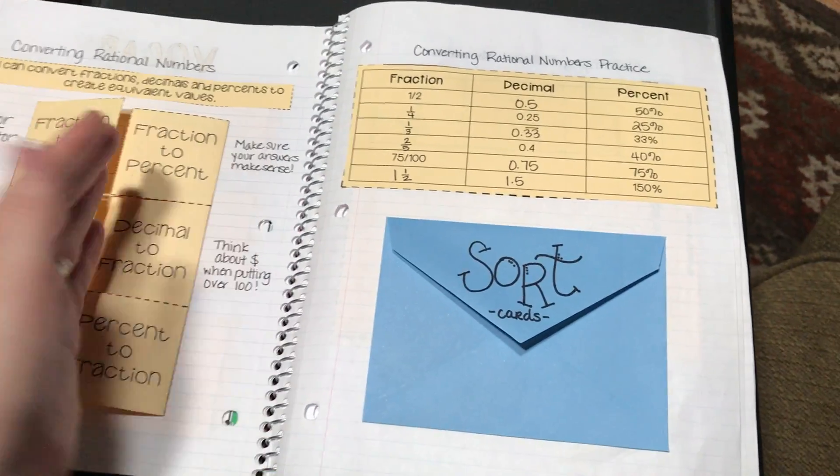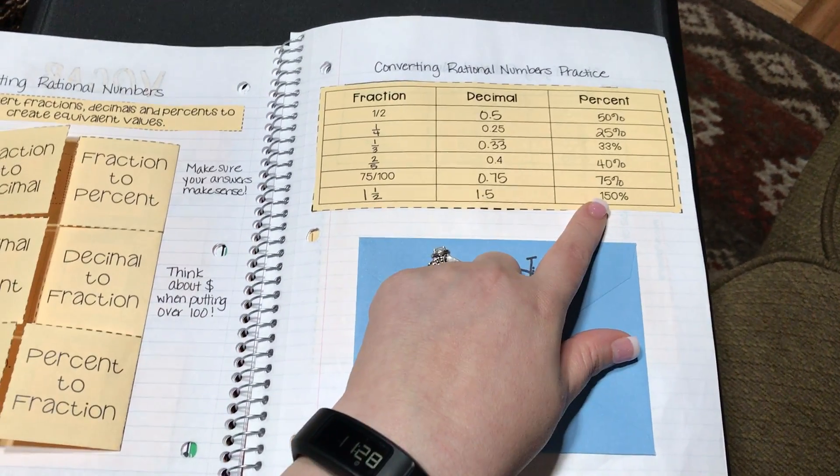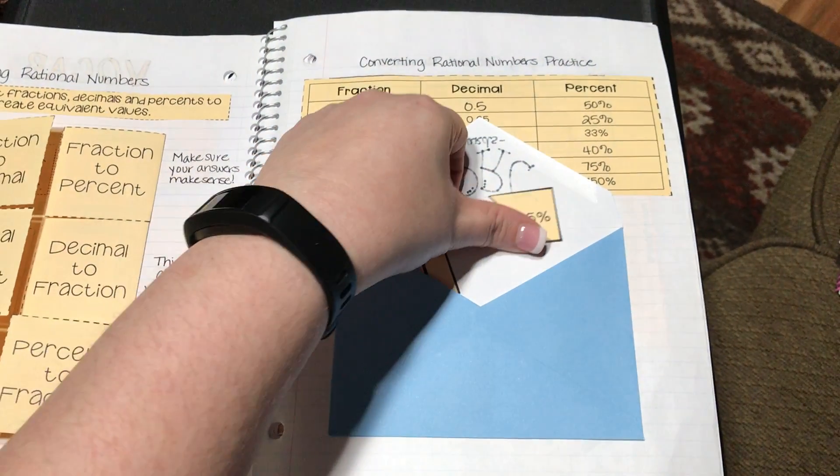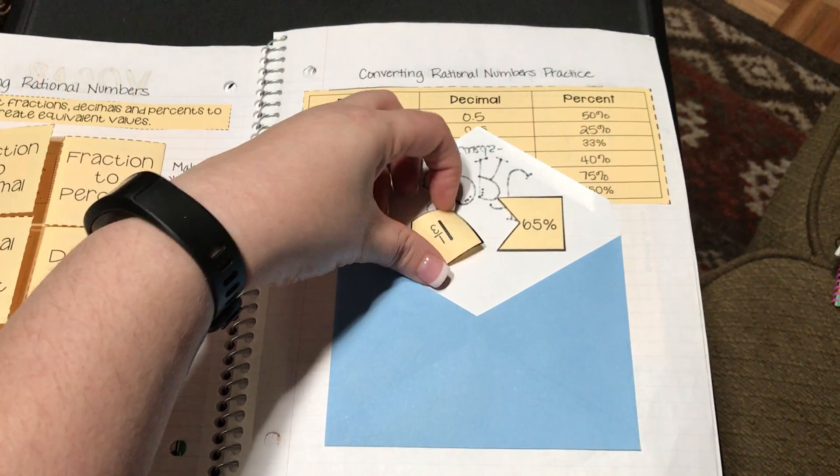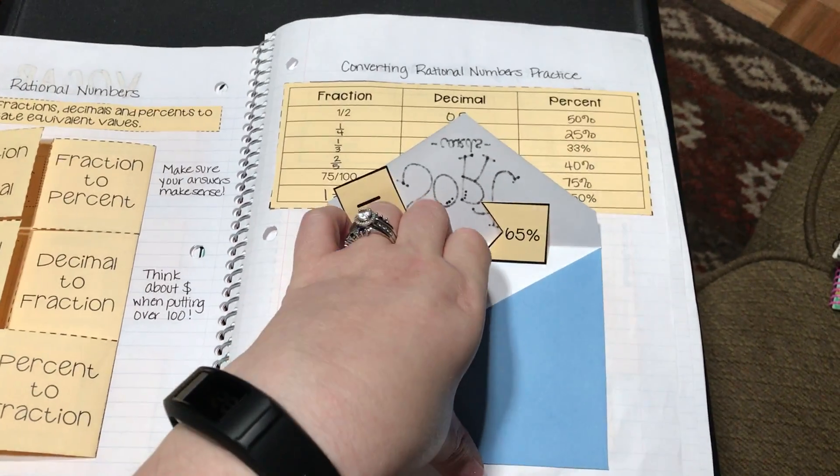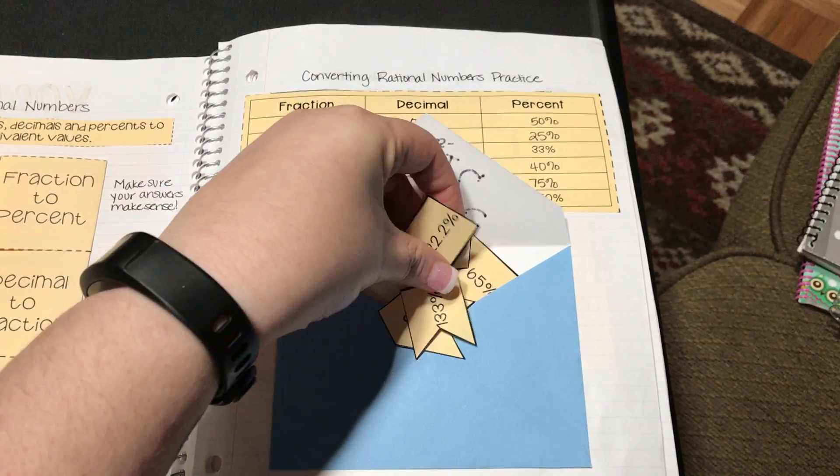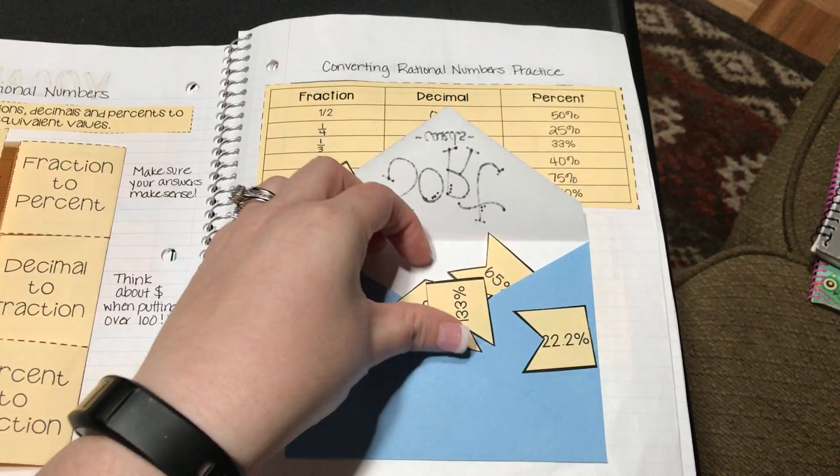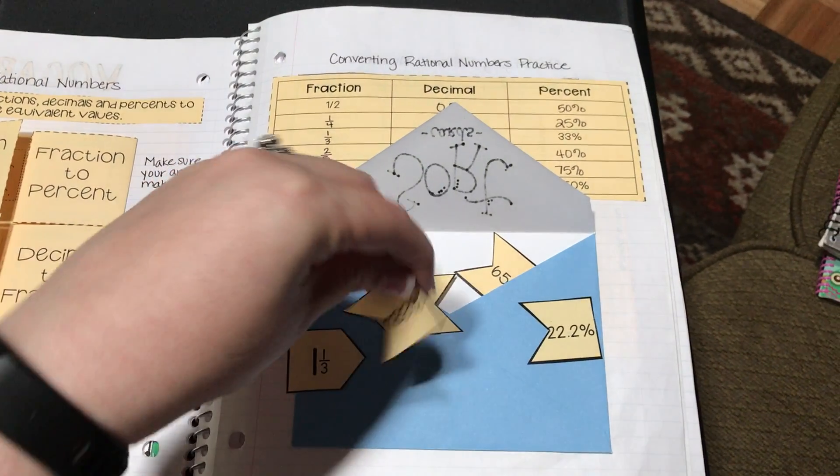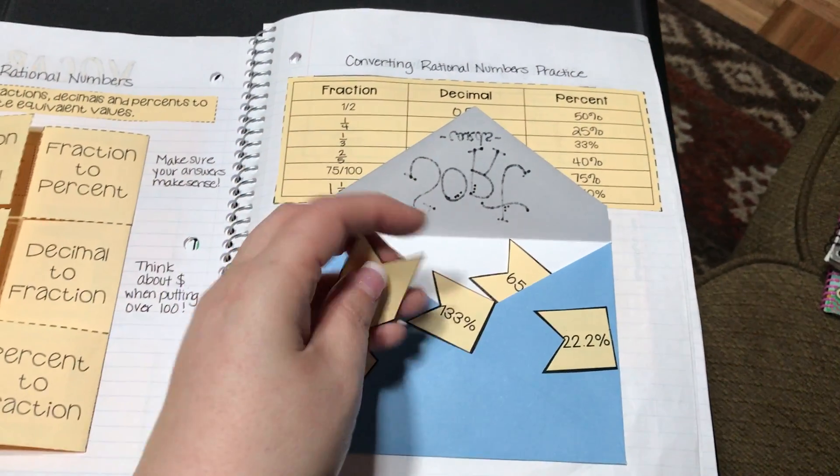On the output section you will see that the students complete the table of fraction, decimal, and percent conversions and then they have a sort to complete. In this sort there are these little three-piece puzzles that go together—there's a fraction, a decimal, and a percent—and they can manipulate them to see which ones match.